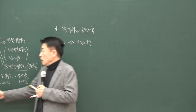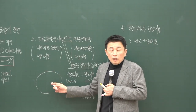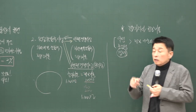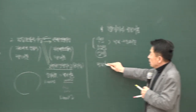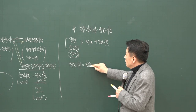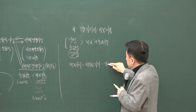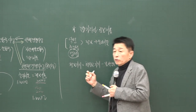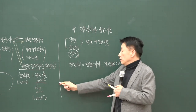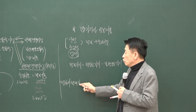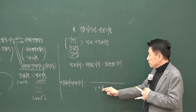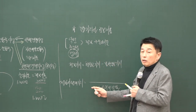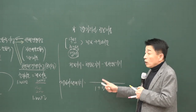정보 가치를 계산하는 방법은 정보가 확실할 때의 가치에서 정보가 불확실할 때의 가치를 공제해서 구합니다. 이를 위해서는 정보의 현재 가치를 구할 수 있어야 해요. 그 공식은 교재 박스에 산식이 있습니다. 예를 들어, A지역이 1년 후 개발될 확률이 50%라고 할 때, 개발이 되면 토지 가치가 8,800만 원, 개발이 되지 않으면 6,600만 원에 거래될 수 있고 요구 수익률이 10%라고 조건이 주어집니다.